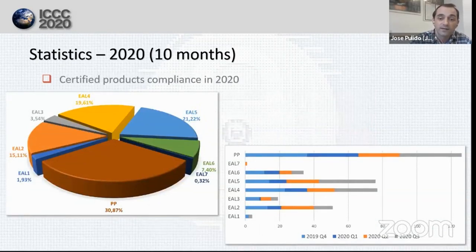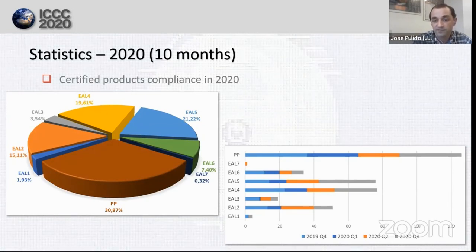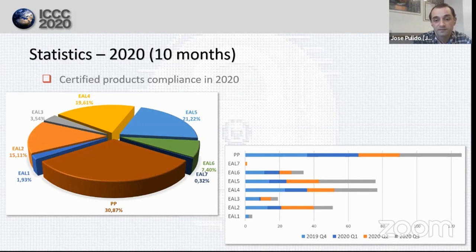If we take a look at the relative number of certifications for each assurance level or protection profile, we will see that the most common case has been certification of products compliant to a protection profile with 96 products. After that, high assurance levels have predominated. EAL5 and EAL4 were the most common during the last years with 66 and 65 products. In lower assurance, EAL2 has been the most common. Only one product has been certified with EAL7 during this year, and we have 23 products certified with EAL6.